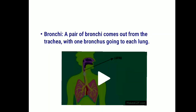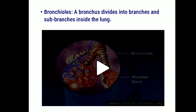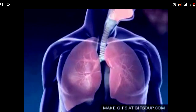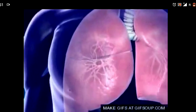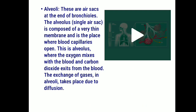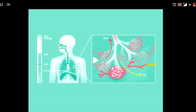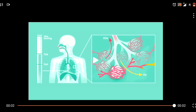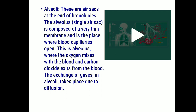The trachea opens into bronchi — a pair of bronchi, with one bronchus going to each lung. The bronchus leads to the smaller tubes known as bronchioles. Then come the air sacs, the basic structures of the respiratory system. A single air sac is known as an alveolus, composed of a very thin membrane where blood capillaries open. This is where oxygen mixes with the blood and carbon dioxide exits from the blood and is released out of the body through the nose.